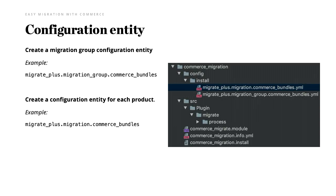Now I'll explain how to create the modules. We will be creating a module just for this Commerce migration. For this module, we need three external modules: migrate plus, migrate tools, and migrate. You need to do a composer require for migrate plus and migrate tools, because migrate is already in core. After doing the basics like creating the module info YAML and .module file, we need to create two things: the group migration configuration and the product configuration.